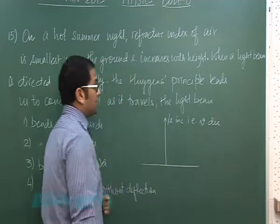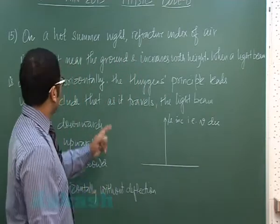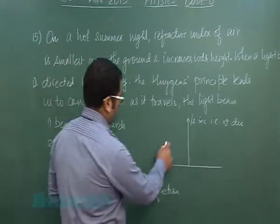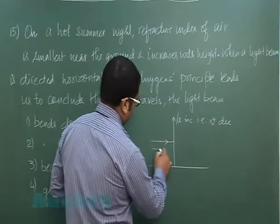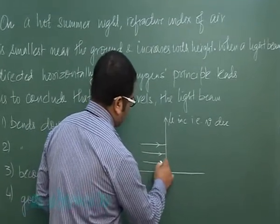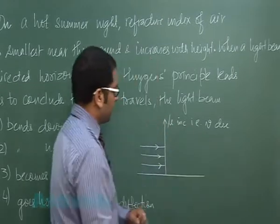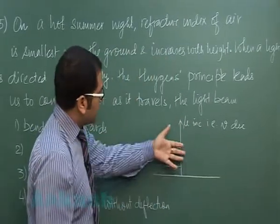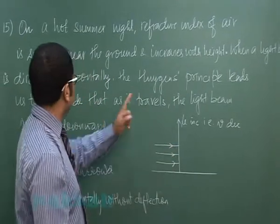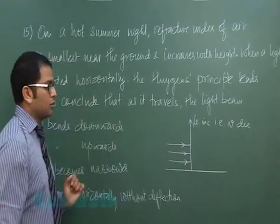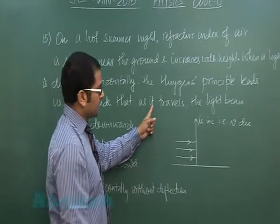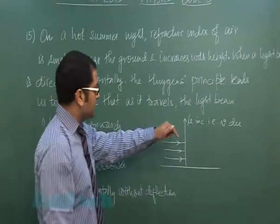When a light beam is directed horizontally, so let me make an assumption that effect is beyond this line, so all those effect is here. So when the light beam is directed horizontally, the Huygens principle leads us to conclude that as it travels, that means light, as it travels, the beam